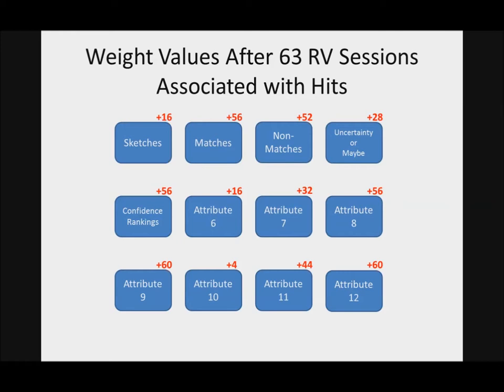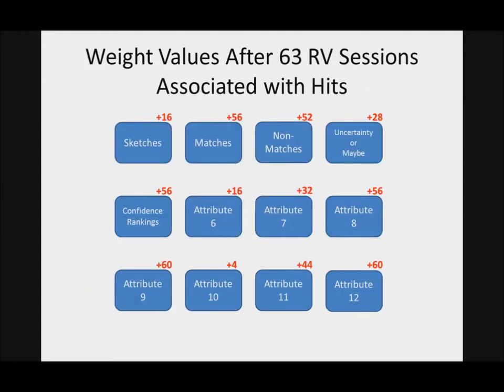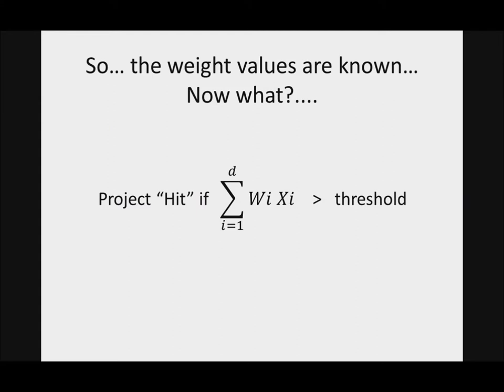So this is the weight values after 63 ARV sessions associated with KIT. Now you can see that certain attributes of an ARV session are given more weight and certain attributes are given less weight. So for this particular program, sketches are valued less and matches are valued pretty high over here. And this attribute right here, attribute 10, looks like it doesn't even matter. But anyways, the point is that we started off with having weight values at plus 1 and now we have corrected weight values. So we know what the weight values are. Now what?